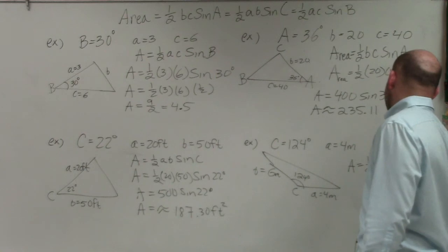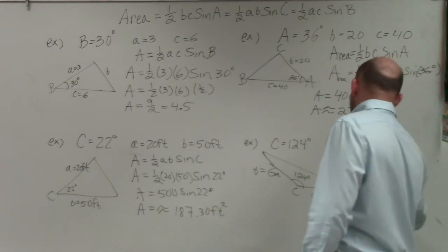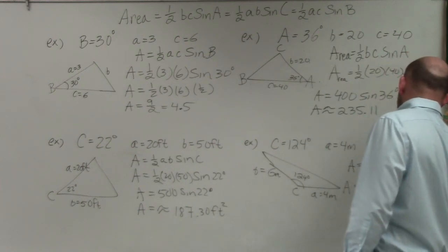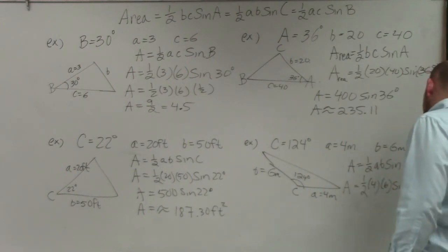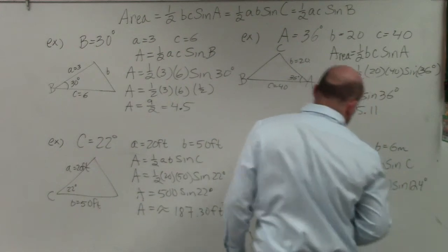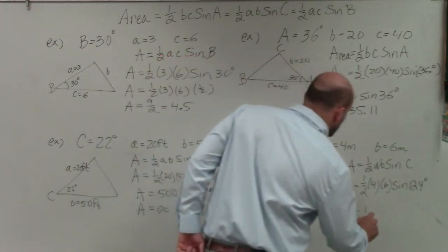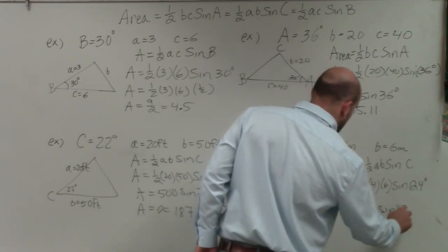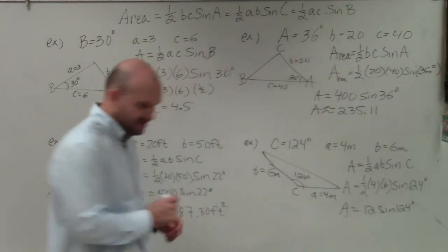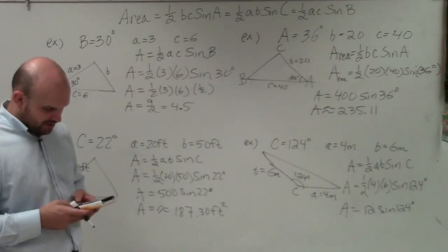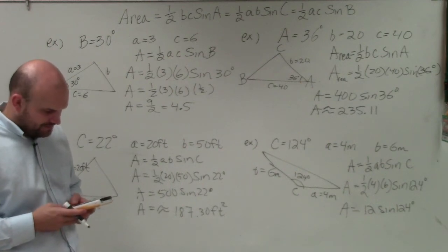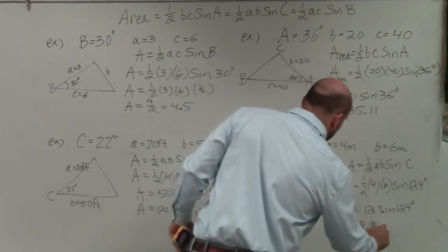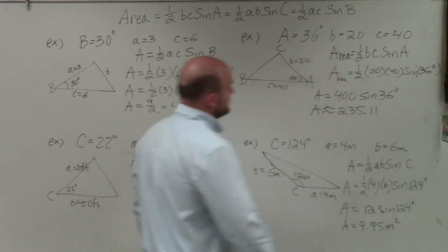So again, we're looking for C, so we're going to use the same formula. A equals 1/2 A times B times the sine of C. A equals 1/2 A, which is 4, times B, which is 6, times the sine of 124 degrees. A equals 1/2 times 2 times 6 is going to be 12. And really, in reality, that's 12 meters squared times the sine of 124 degrees. But I will add that at the very end. So I do 12 times the sine of 124. And I get 9 points rounded up to 5. So area equals 9.95. And that's meters squared.